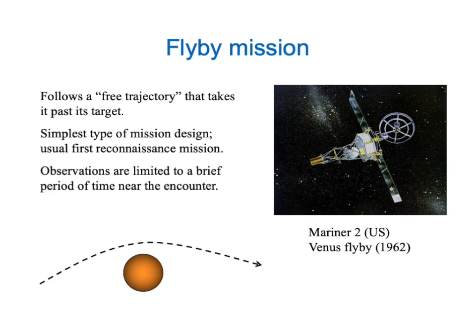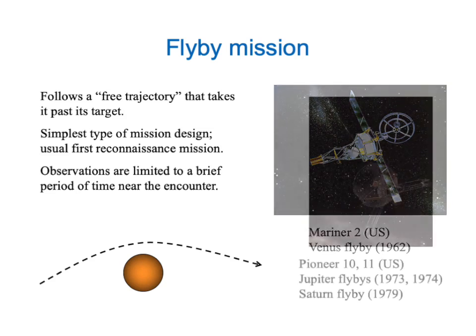The disadvantage is that your observations of the target planet are limited to a brief period of time near the point of closest approach, so you have to cram in a lot of observation in a short period of time. One of the most notable fly-by missions was Mariner 2, a fly-by past the planet Venus. Another very famous one was the twin Pioneer 10 and 11 mission — both spacecraft had fly-bys of the planet Jupiter in 1973 and 1974, the first close-up look at that planet in human history. And Pioneer 11 was also able to make a fly-by of Saturn in 1979.